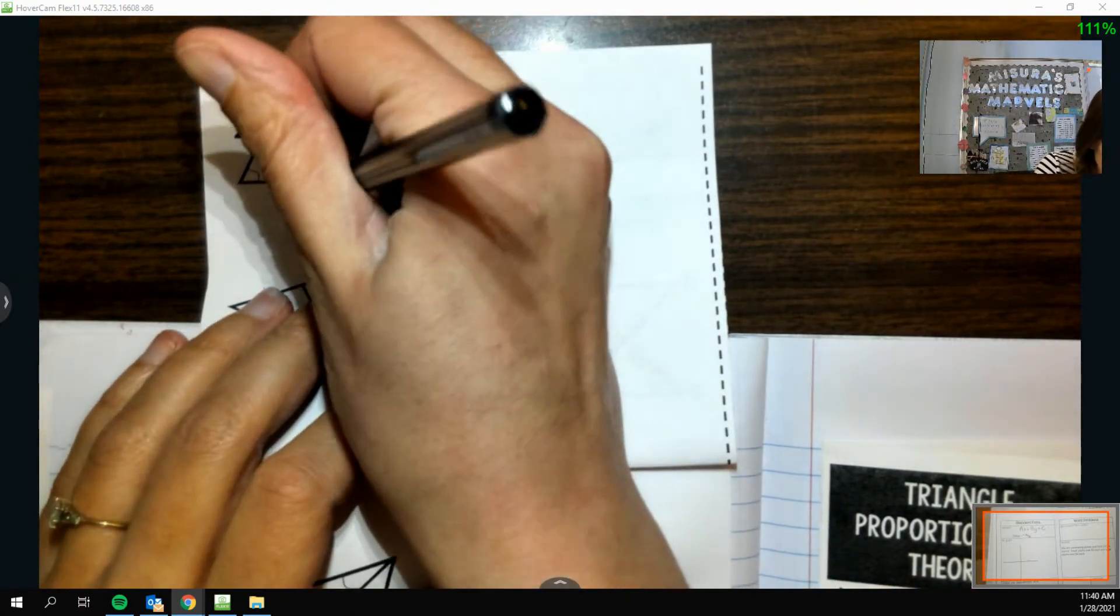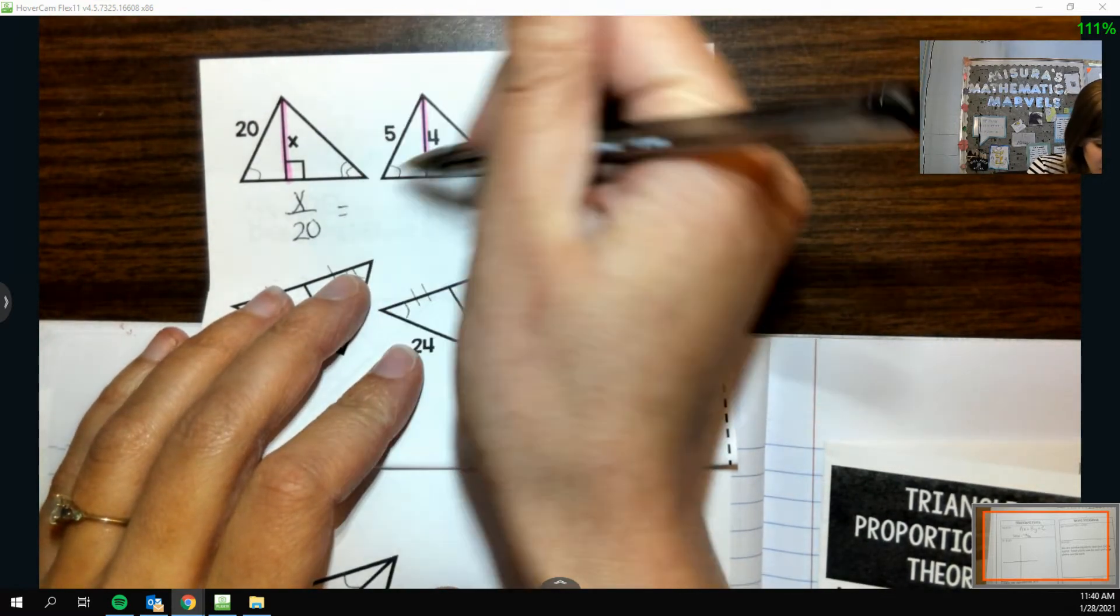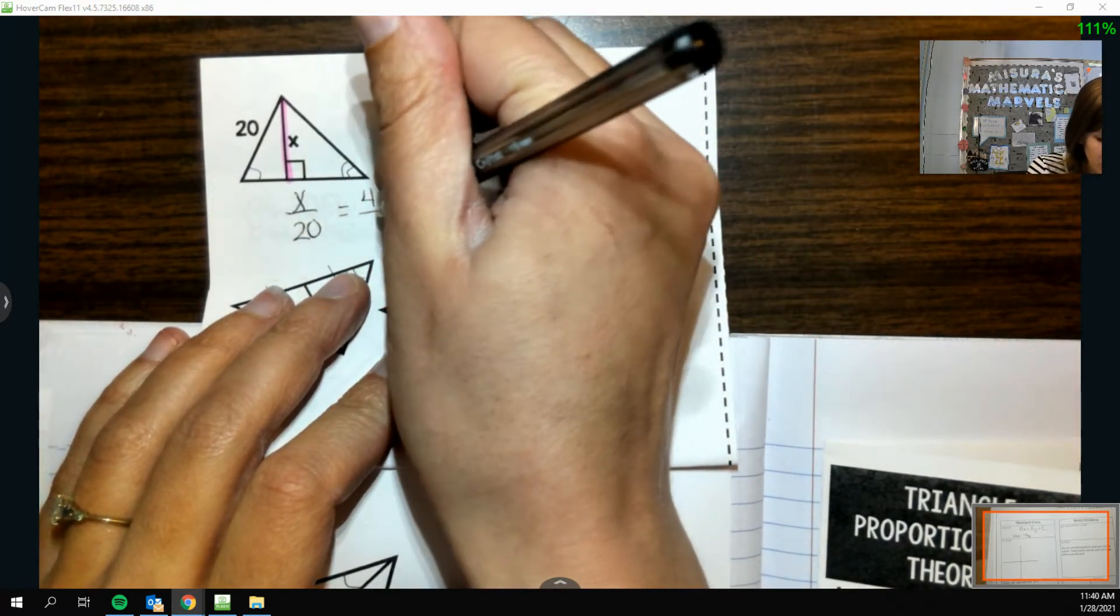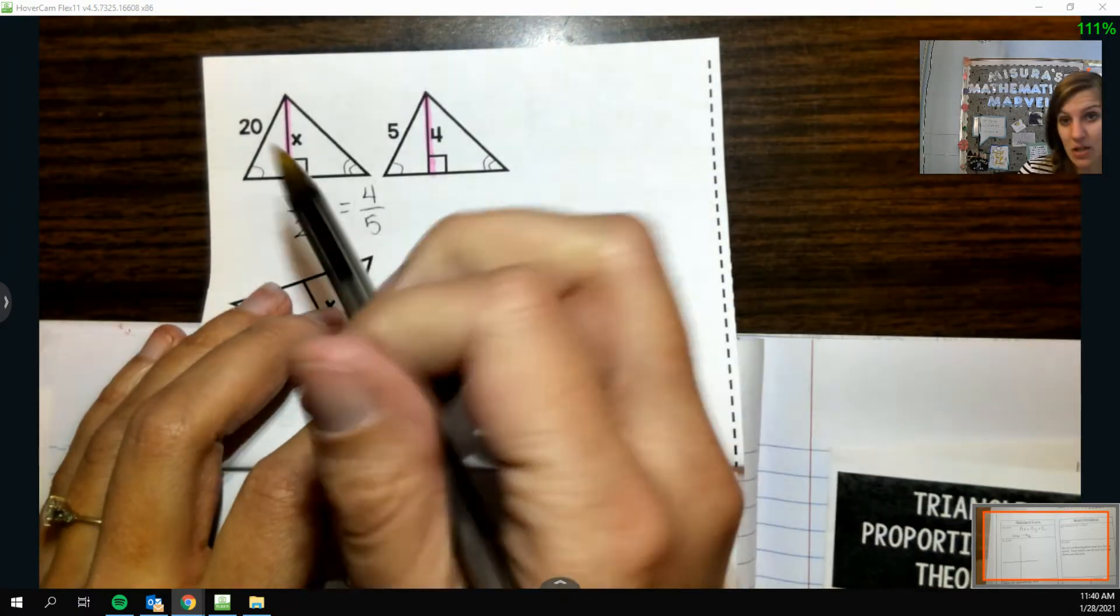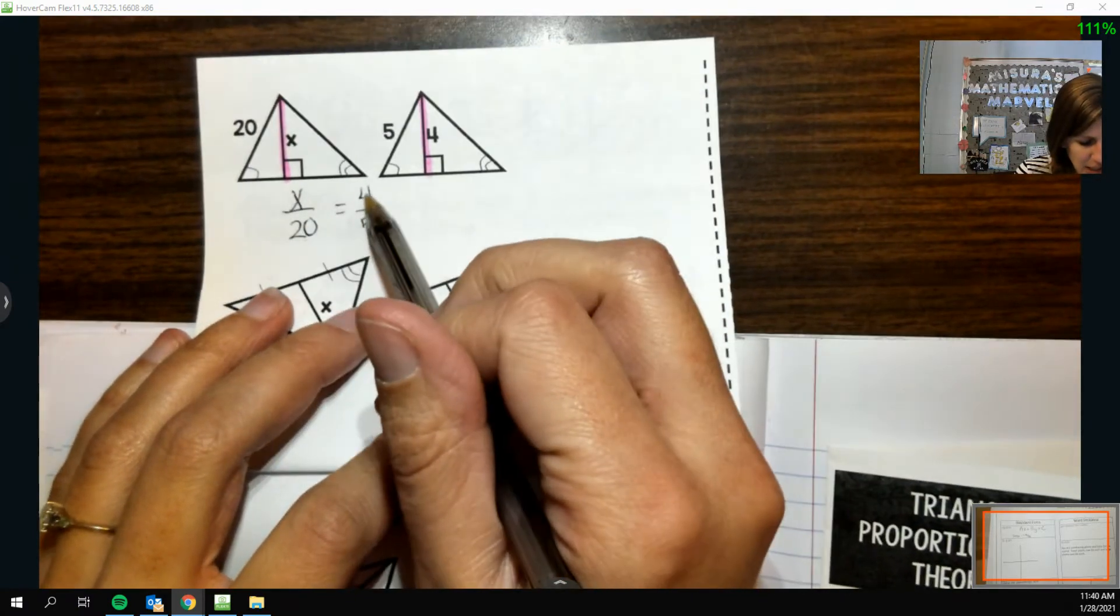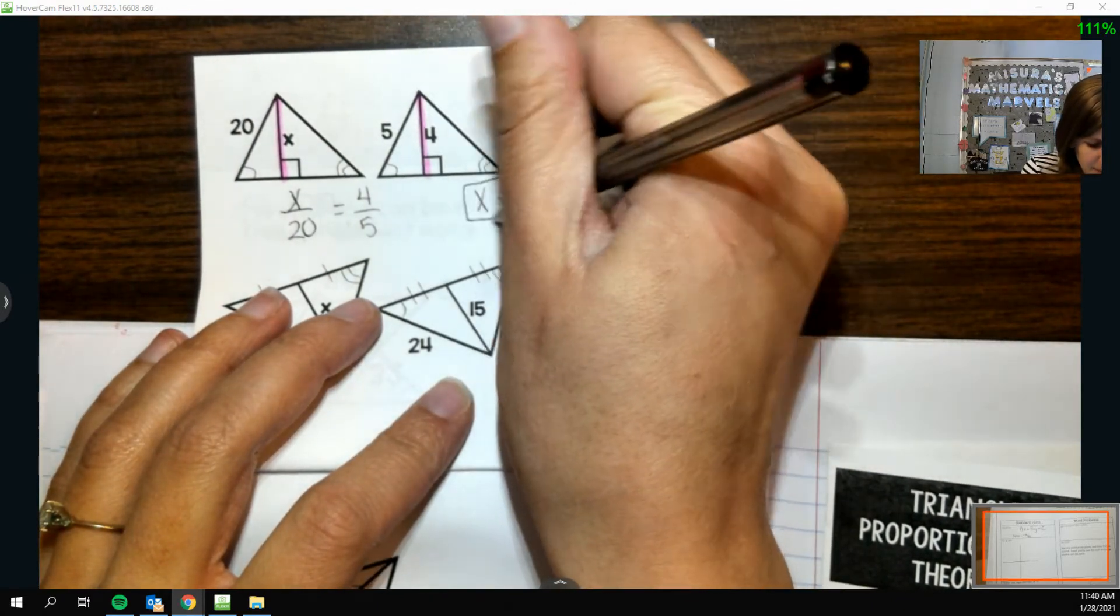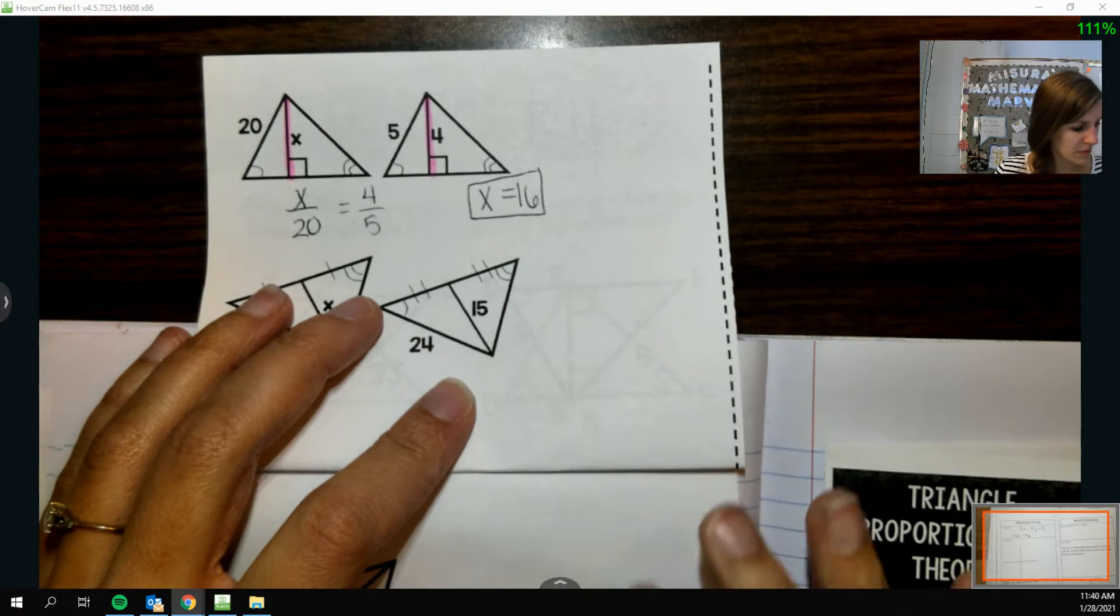altitude over side looks like x over 20. And similarly, over here, altitude over side would be 4 over 5. And then we can just cross multiply and solve. But I can also kind of see, like, here I multiplied by 4. So I'd have to do that there as well. So it'd have to be 16.